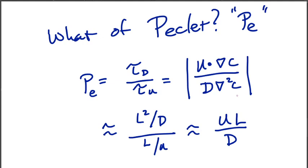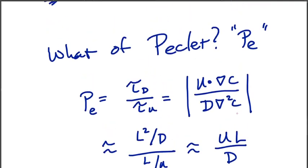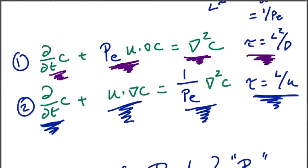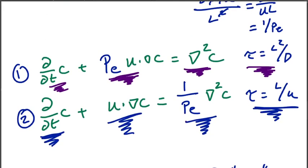Some takeaways: if there is one term in the system, all timescales are set by that term. With two terms, you get one non-dimensional number — like the Peclet number here — representing the ratio between them. As you add more physics or terms, you get more non-dimensional numbers. With two terms we had one ratio; with three terms, we'd expect two non-dimensional numbers. Once you pick length and time scales, use them consistently — the system itself often suggests the right scales by setting one or more terms equal to one.